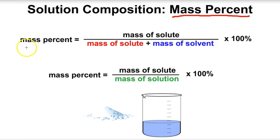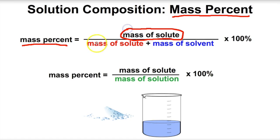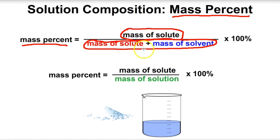What is mass percent? To get the mass percent of a solution — to figure out how much solute is dissolved — we take the mass of the solute, the stuff that's dissolved, and divide it by the mass of the entire solution. Then we multiply by 100%. So: mass percent equals mass of solute divided by mass of solution, times 100.